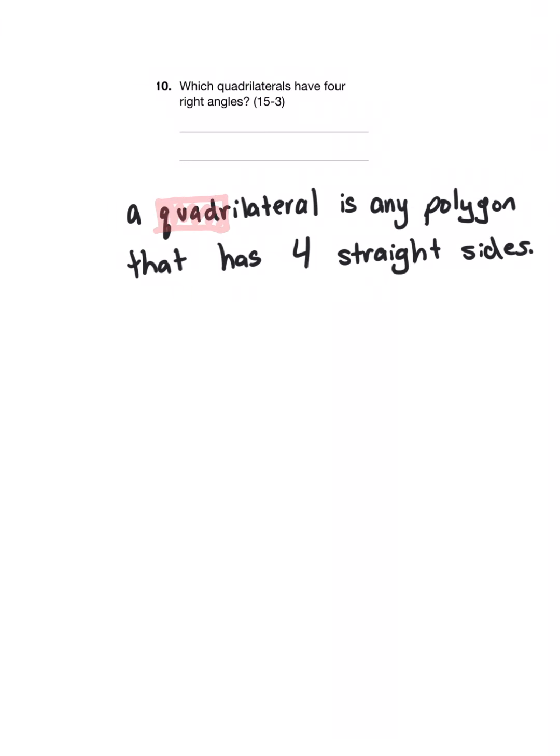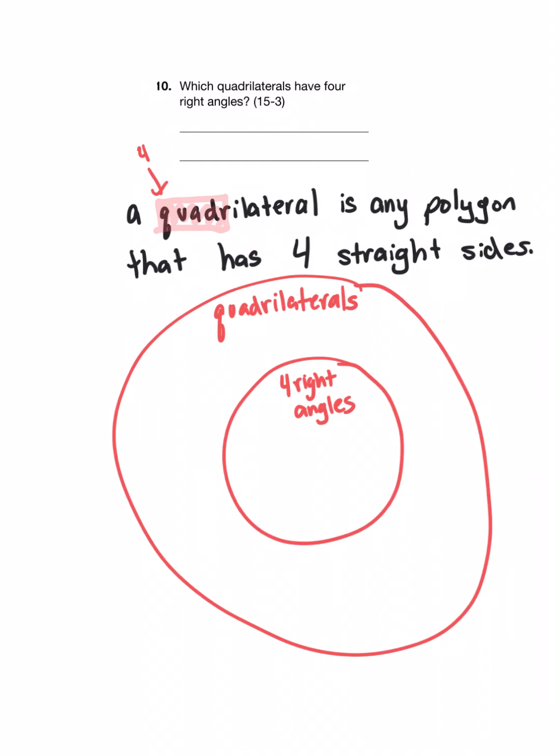Okay, so this question asks us to name which quadrilaterals have four right angles. Remember that a quadrilateral is any polygon that has four straight sides. You can remember this because the root word quad means four. Now quadrilaterals can be classified by their angles or pairs of sides. In this case, we're being asked to classify specific kinds of quadrilaterals that have four right angles.